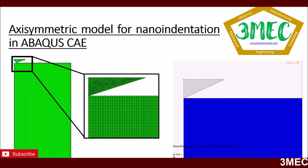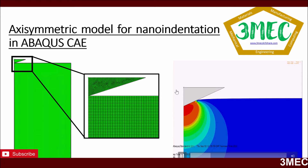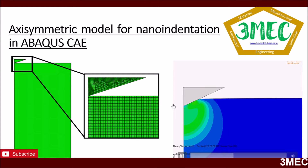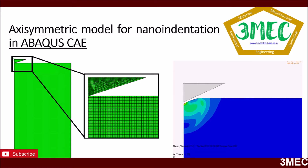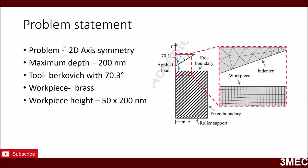In this axisymmetric case, we have an indenter in an axisymmetric environment and a material where we will indent. This is the zoomed view of the mesh in this area. After the nano indentation, we need to show how it indents and comes out, and then we will measure the force and displacement at this point, which gives us a way to read the elastic properties.